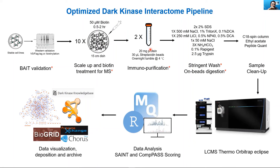We perform two independent immunoprecipitations using 20 microliters of protein and 30 microliters of streptavidin beads with overnight IP. We have also spent significant effort optimizing SDS conditions, high-to-low salt gradients, and detergent compositions. We use RapiGest and on-bead digestion for eluting proteins, and an additional cleanup step before running samples on the mass spectrometer. Mass spec searches are performed using MaxQuant, followed by SAINT and Compass scoring, and all data will be publicly available through the Dark Kinase Knowledge Base or public repositories like BioGRID.